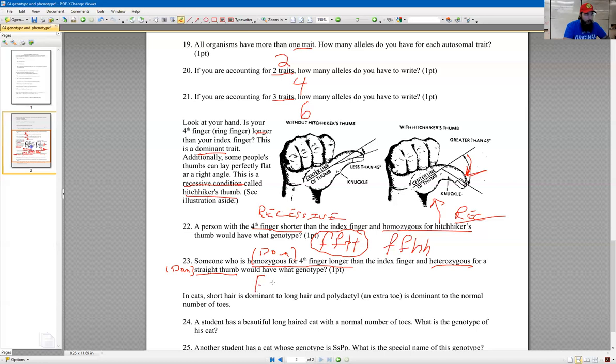That would be big F, big F, right? Homozygous means same, these two are the same. And it's the dominant version, so they're the same, two big F's. Heterozygous for a straight thumb. So capital T, lowercase t, right? Because we are heterozygous for a straight thumb. That's this right here, right? Heterozygous for that, homozygous for the fourth finger. And when we write out two trait genotypes, we just put them all together.